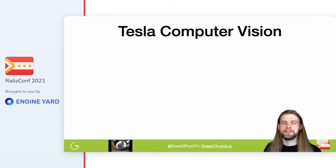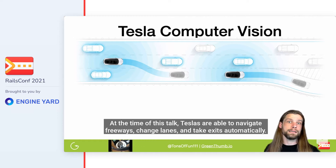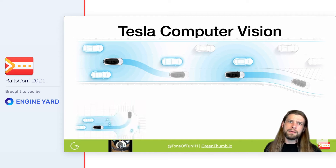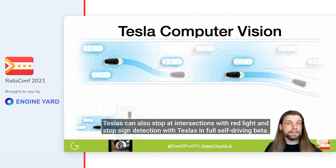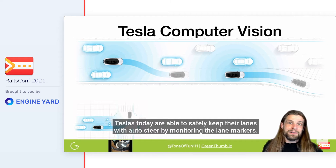Autopilot is a driver-assist feature with the ambition of full self-driving capabilities. At the time of this talk, Teslas are able to navigate freeways, change lanes, and take exits automatically — a feature known as Nav on Autopilot. Teslas can also stop at intersections with red light and stop sign detection. With Tesla's full self-driving beta, they're capable of turning at intersections and driving users from point A to point B with little or no intervention.